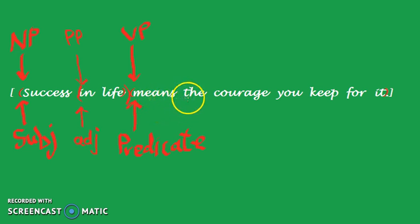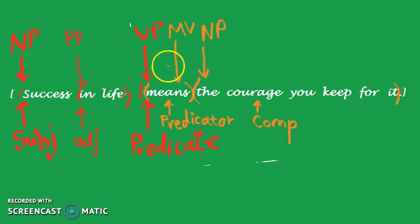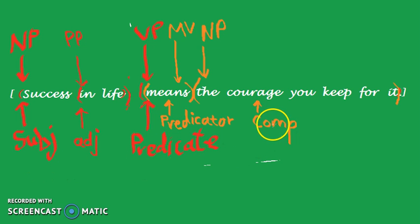After the subject, we have the predicate, which is composed of the main verb and what comes after it — the complement. We bracket further: a bracket around the verb and a bracket around the complement. The main verb is the predicator, and all of 'the courage you keep for it' is a noun phrase acting as the complement of the main sentence.